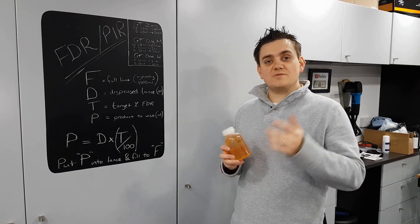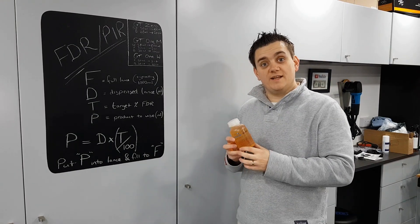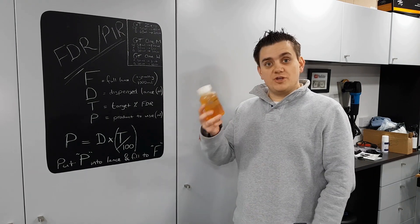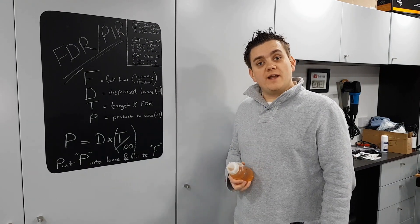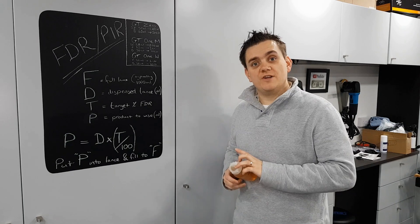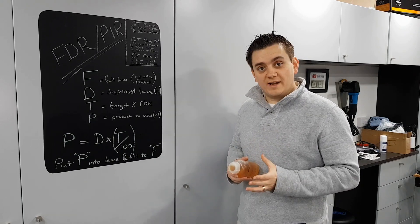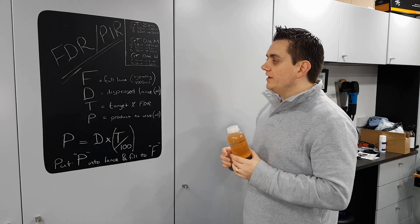Hi guys, welcome back to Detailing and the Beast. As promised on my undercarriage cleaning video, I'm giving you a quick rundown on how to work out FDRs, which is final dilution ratios, or PIRs, which is panel impact ratios. They're the same thing, just called two different things.